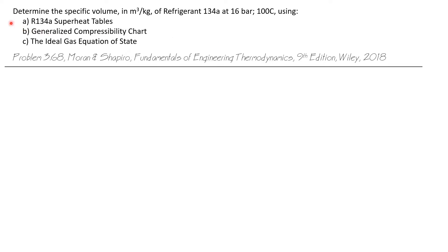The first is going to be the refrigerant superheat tables, which will give us a known accurate value. The second is something known as the generalized compressibility chart. And we'll use the ideal gas law as the third method.